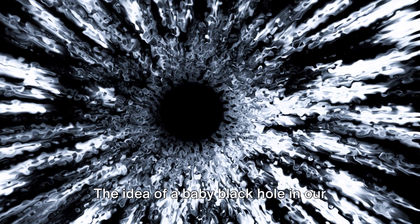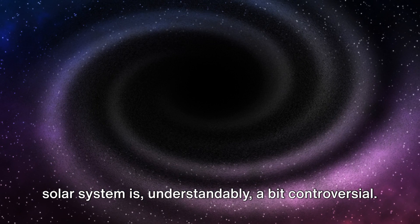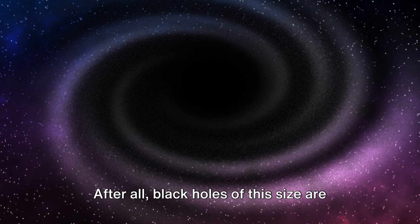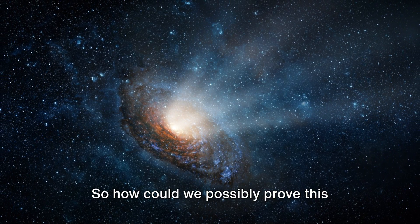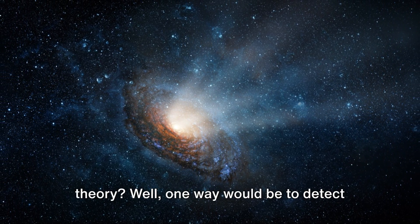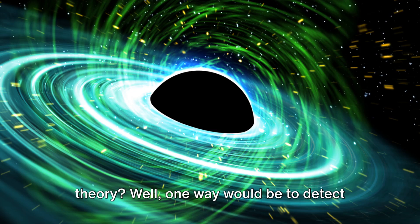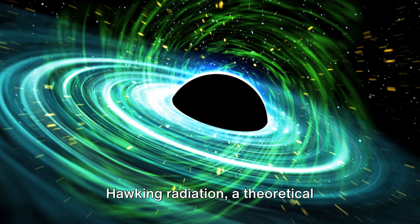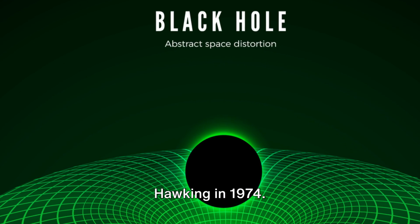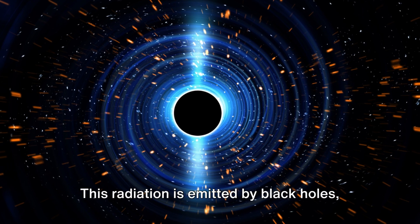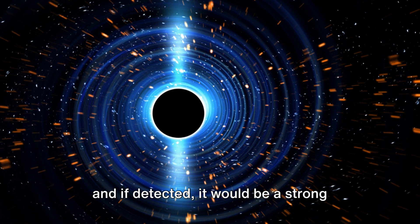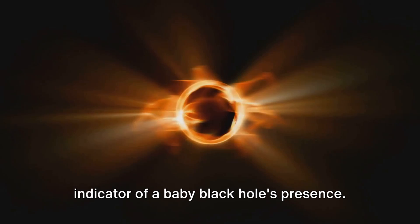The idea of a baby black hole in our solar system is understandably a bit controversial. After all, black holes of this size are theoretically possible but have never been observed. So, how could we possibly prove this theory? Well, one way would be to detect Hawking radiation, a theoretical prediction made by physicist Stephen Hawking in 1974. This radiation is emitted by black holes and if detected, it would be a strong indicator of a baby black hole's presence.